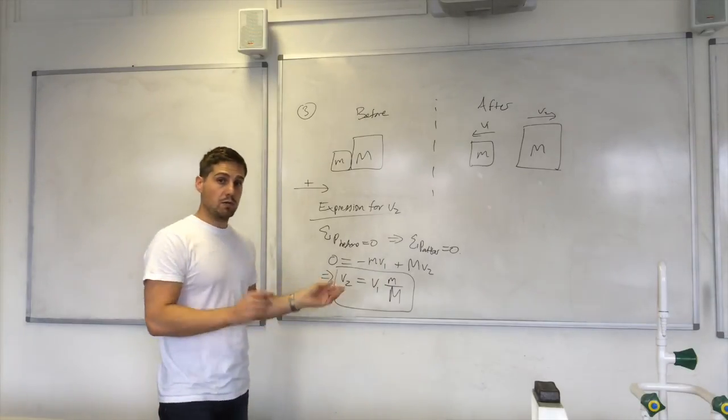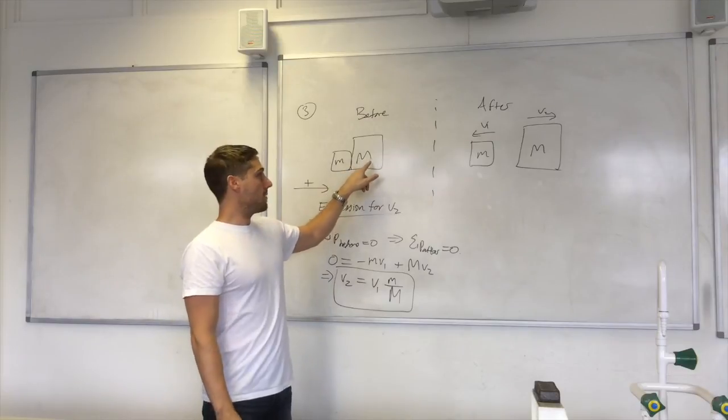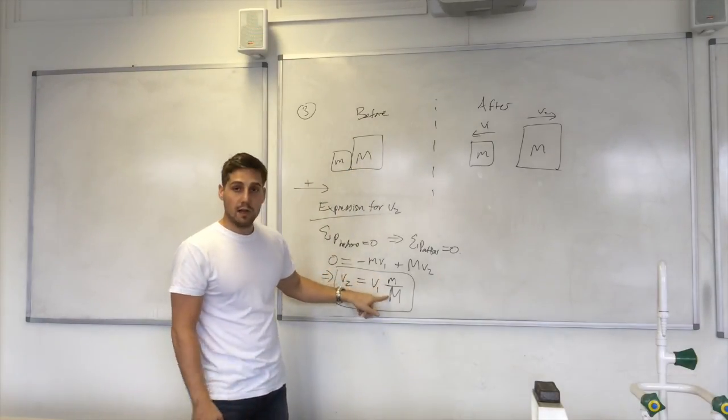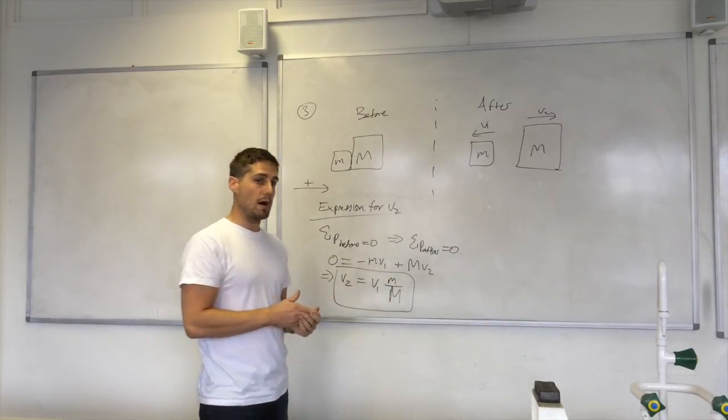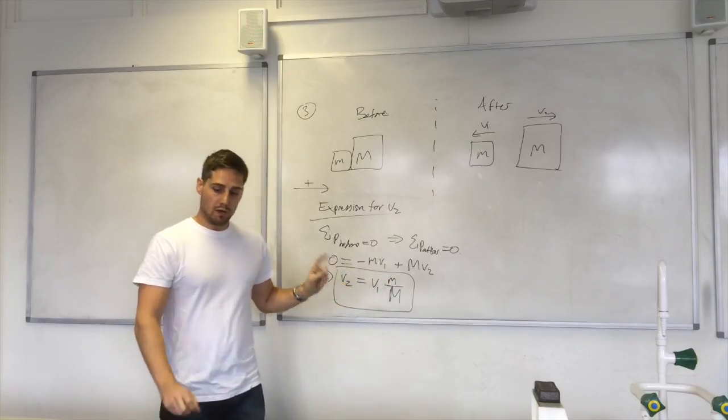Let's comment on v2. Do you remember that I said lowercase m is smaller than uppercase M? So in that case, this term here, this ratio of masses that's always going to be less than one. So I've got something less than one multiplied by v1.